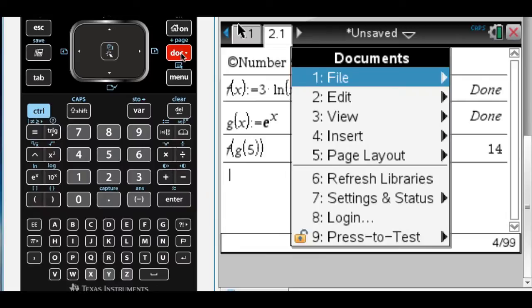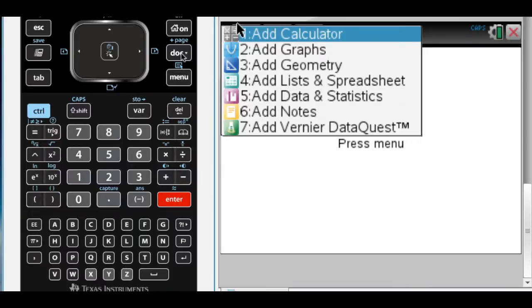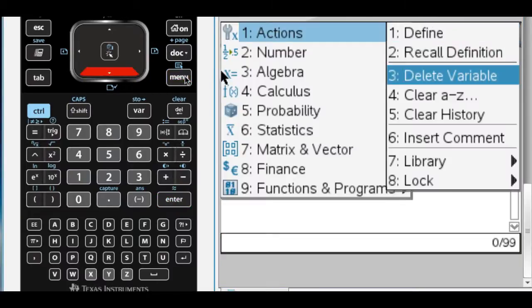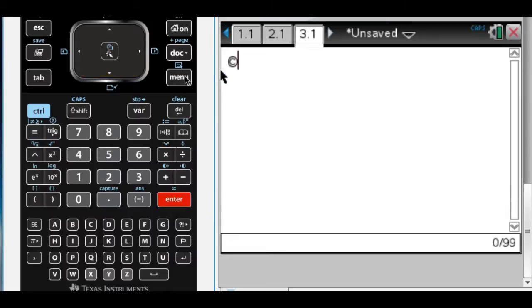So we're going to do a new problem. So we're going to do the doc key. We're going to insert, and then this, and then calculator page. And then you don't need to do this, but I'm going to do this just to keep things clear.